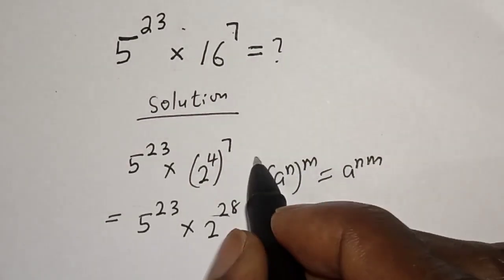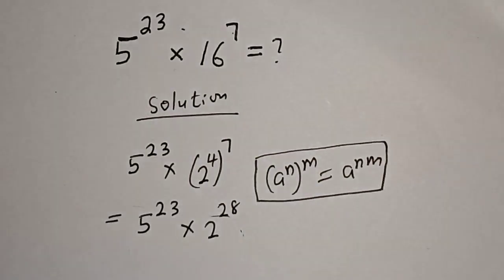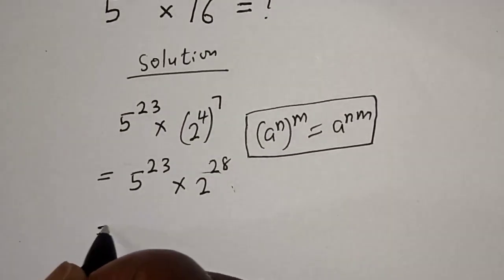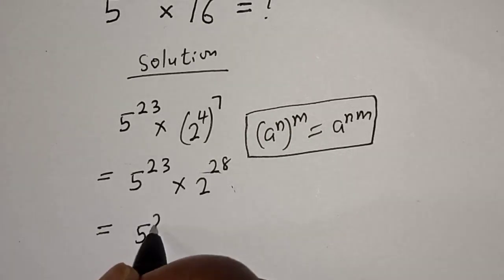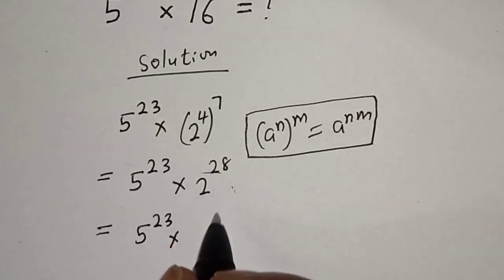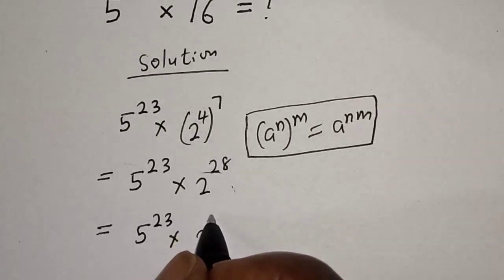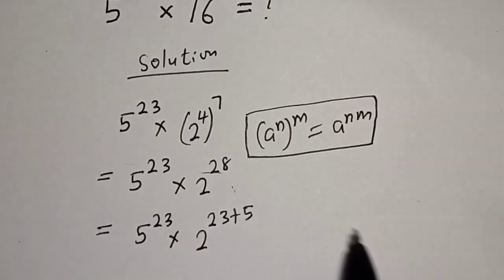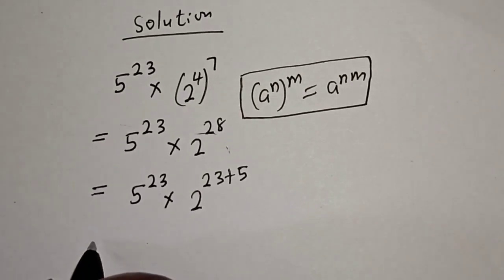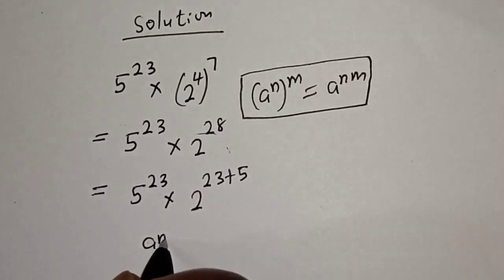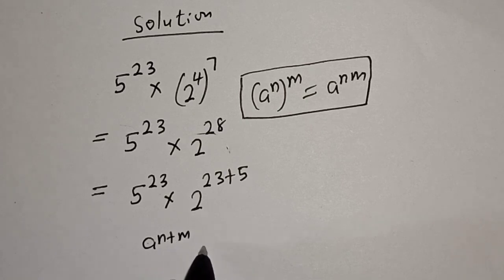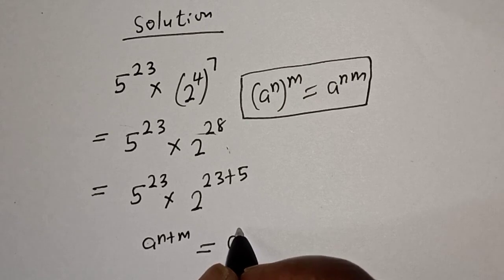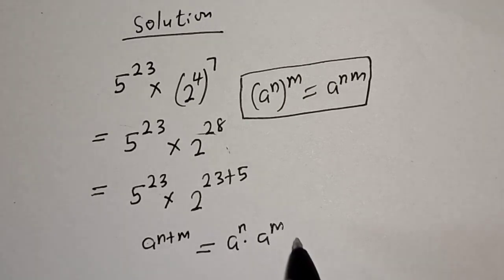Then this is equal to 5 raised to power 23 multiplied by 2 raised to power 23 plus 5. Take note of this rule: a raised to power n plus m is equal to a raised to power n multiplied by a raised to power m.